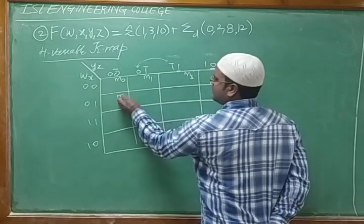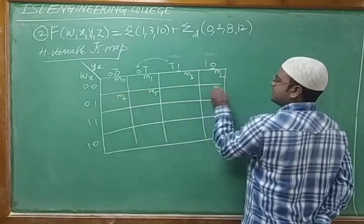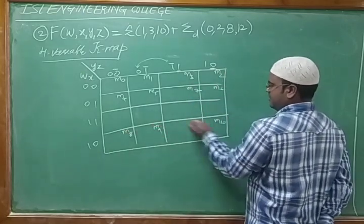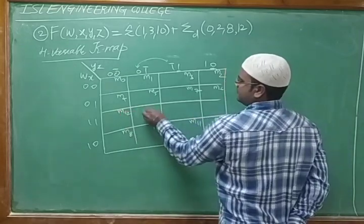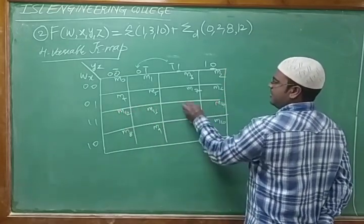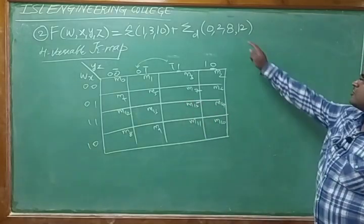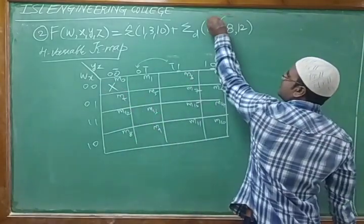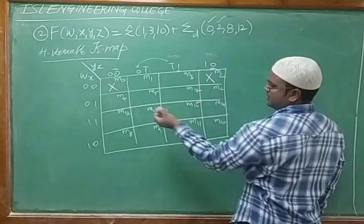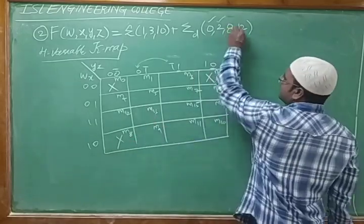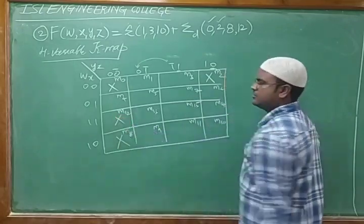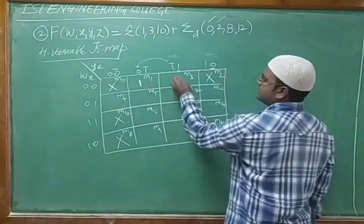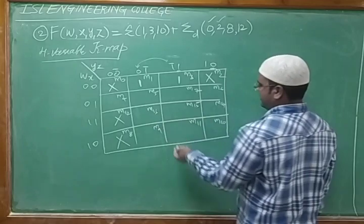The boxes are M0, M1, M3, M2, then M4, M5, M6, M7, then M8, M9, M10, M11, then M12, M13, M14, M15. Don't care bits are 0, 2, 8, 12 — mark those with X. The given minterms 1, 3, and 10 are marked with 1. Minterm 10 is located in the third row.